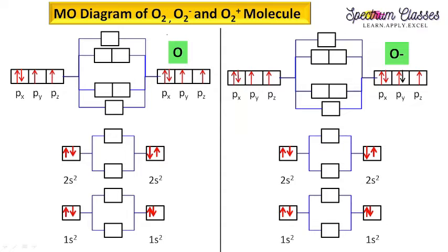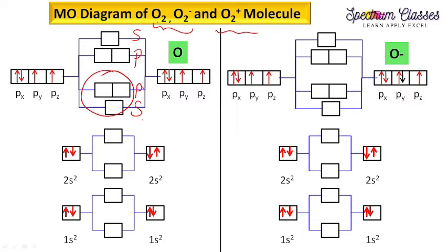Coming to the writing of molecular orbital diagram for oxygen and oxygen ions. First of all, you have to follow the order I am going to explain here. Oxygen is very special. We follow the S-P order for bigger problems — where P stands for pi and S stands for sigma. We need to follow this order.